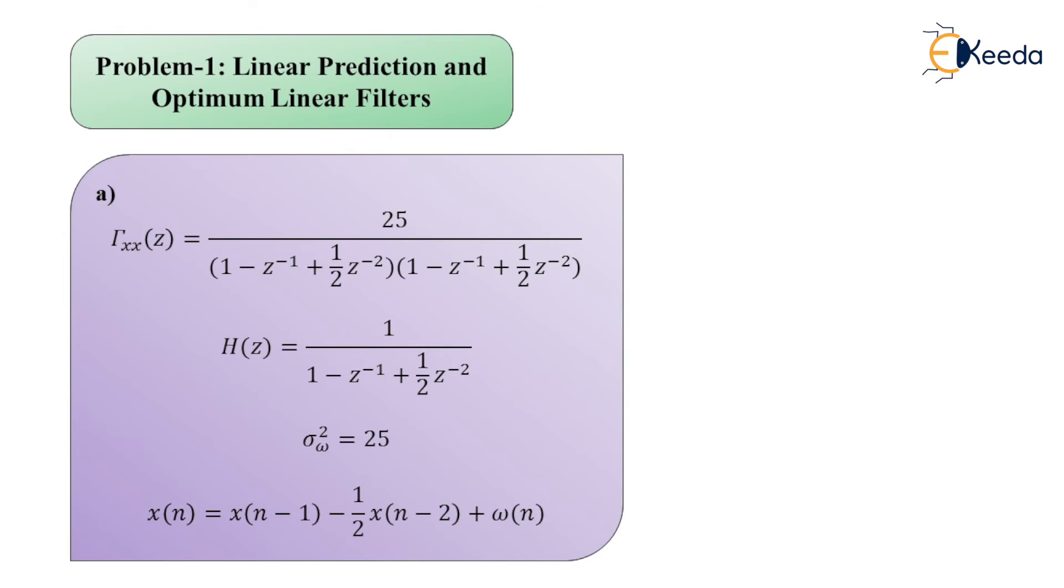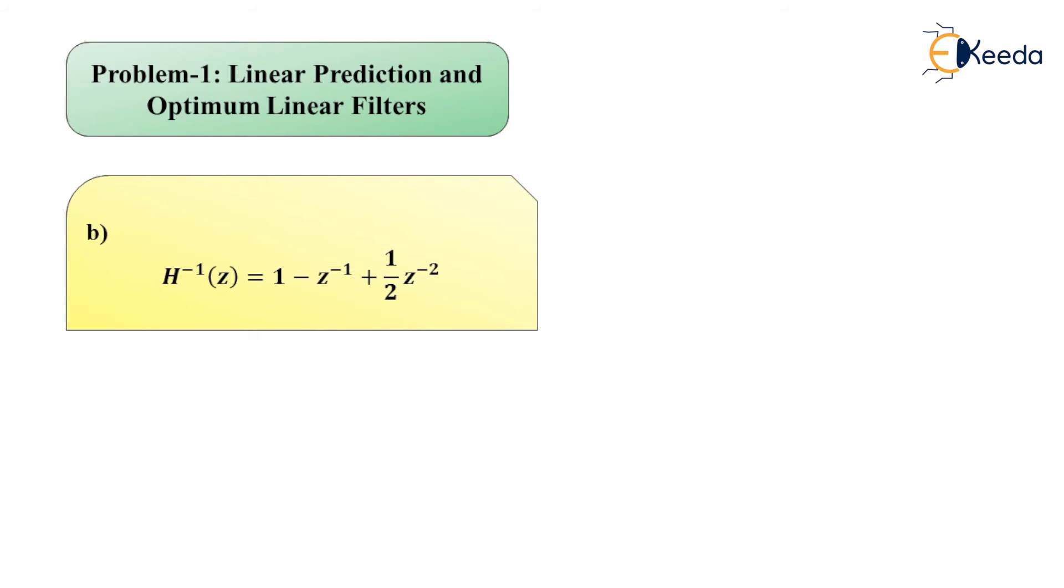Now next we move on to find solution to part B. For part B, we will simply write the whitening filter is denoted H^(-1)(z) which equals 1 - z^(-1) + 1/2 z^(-2). So this will be the straightforward simple solution to part B of the problem statement.